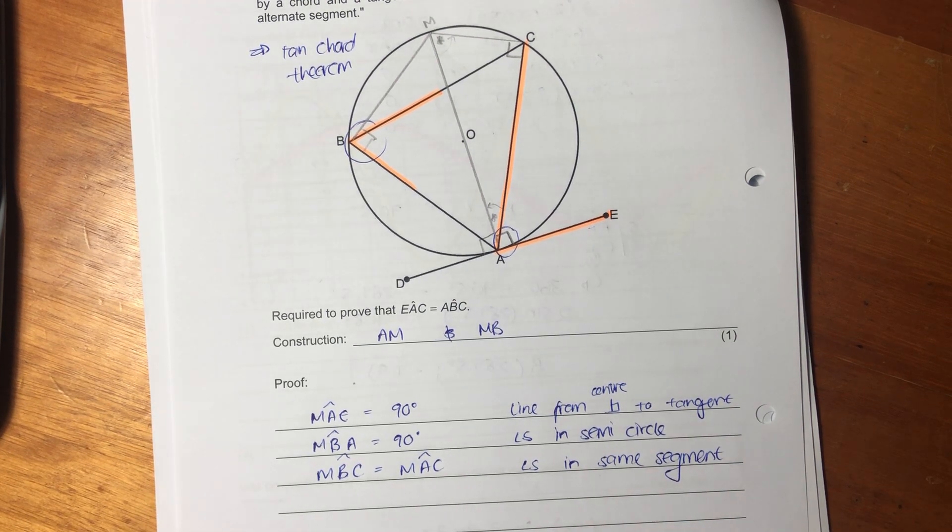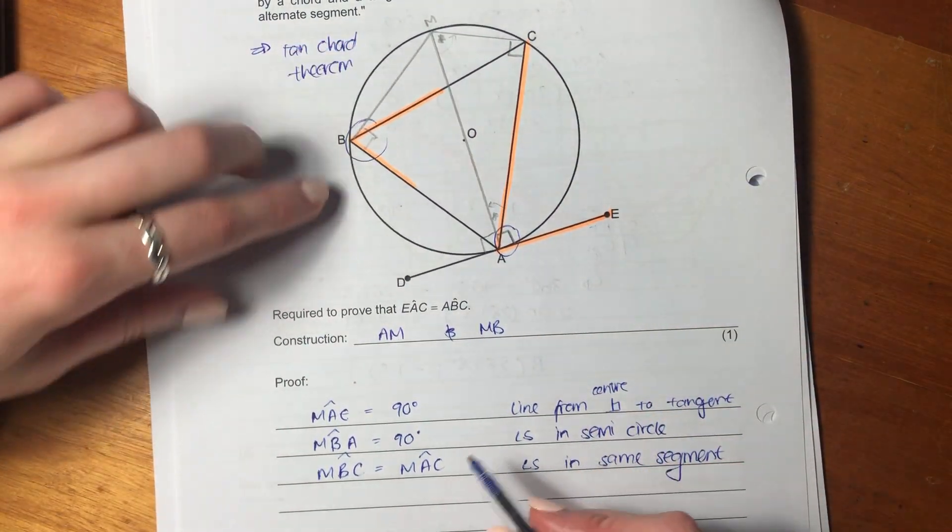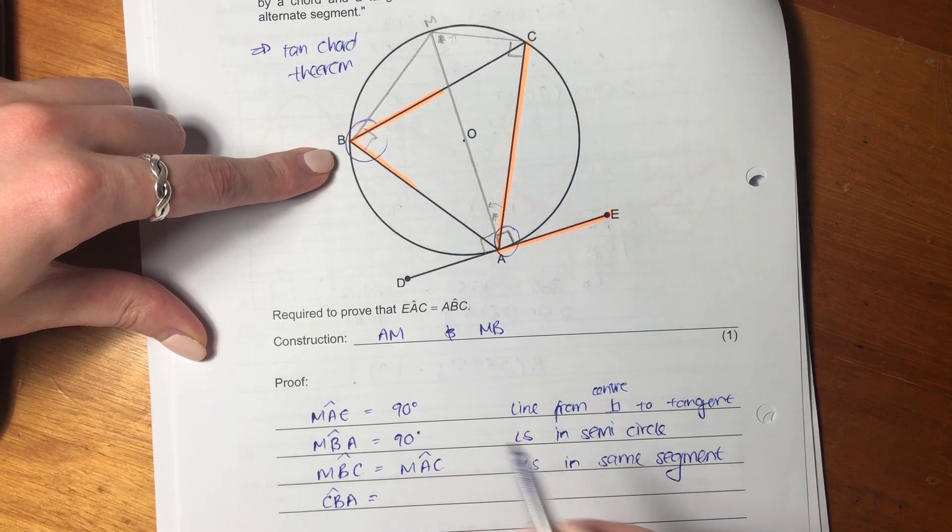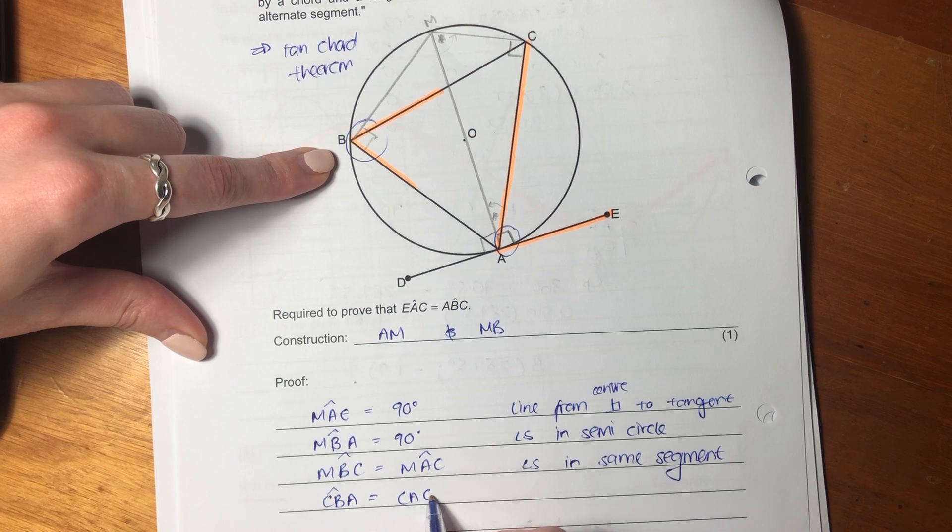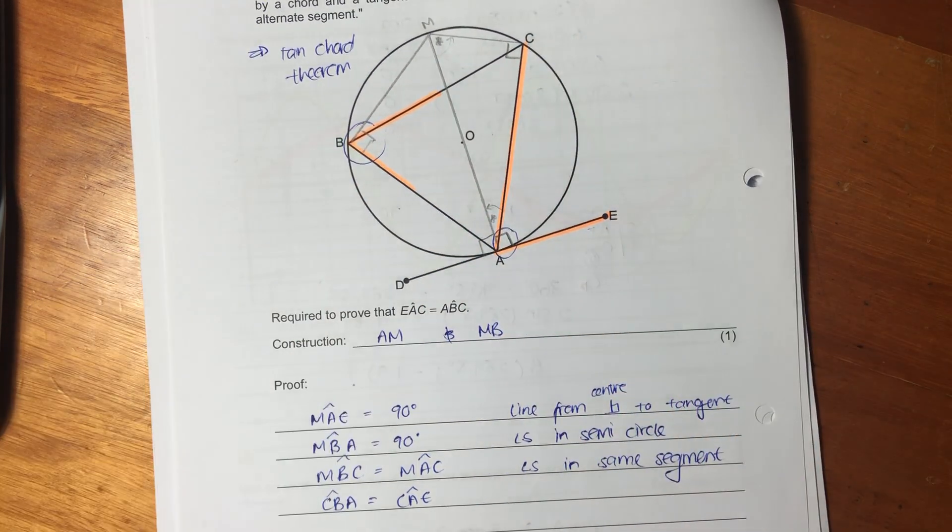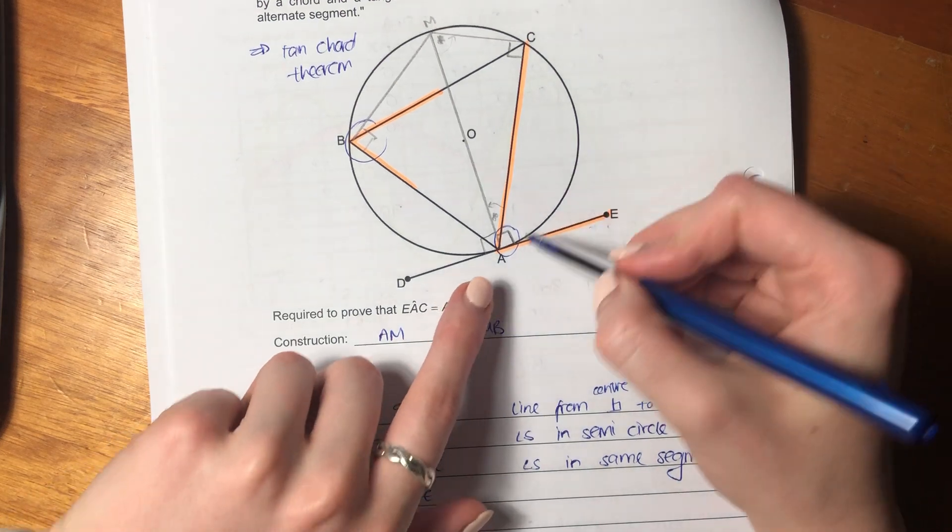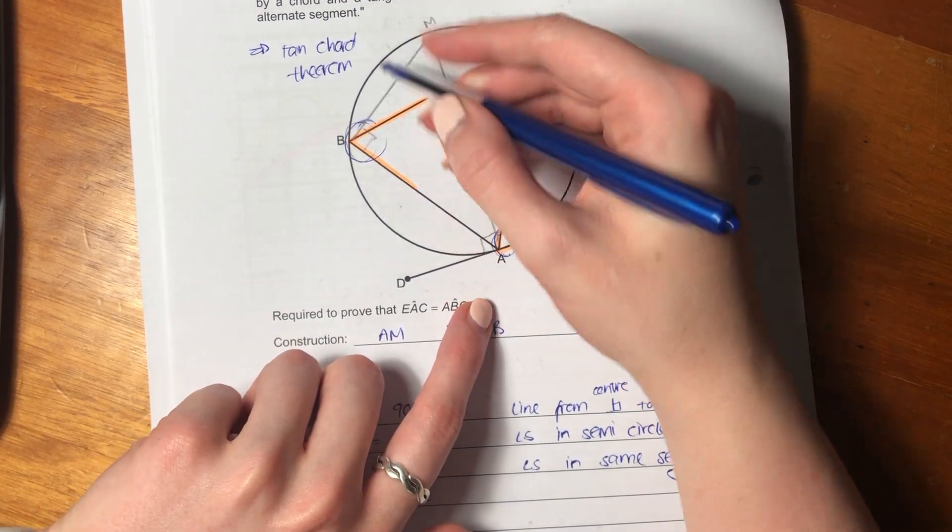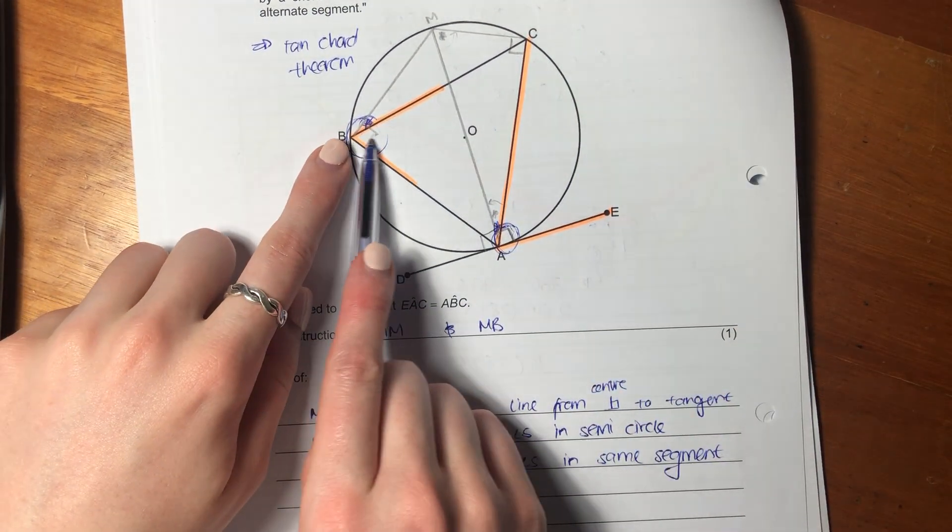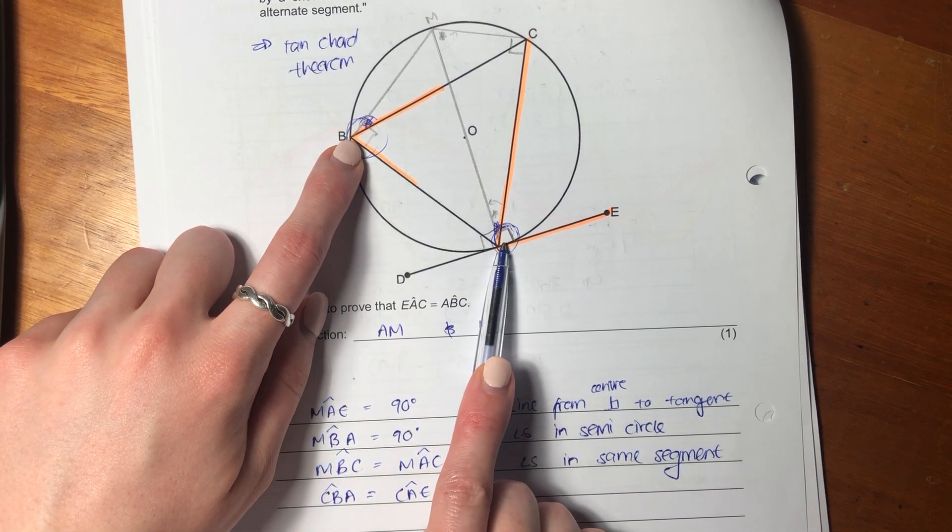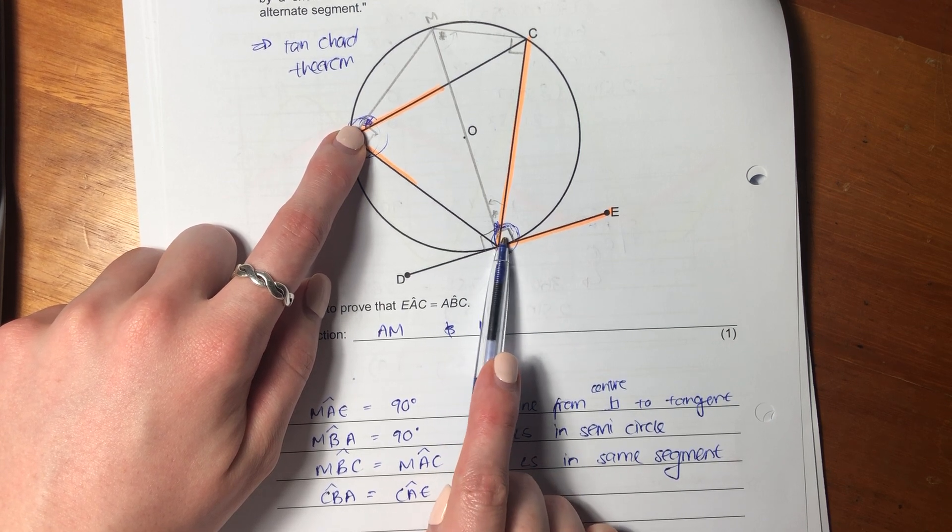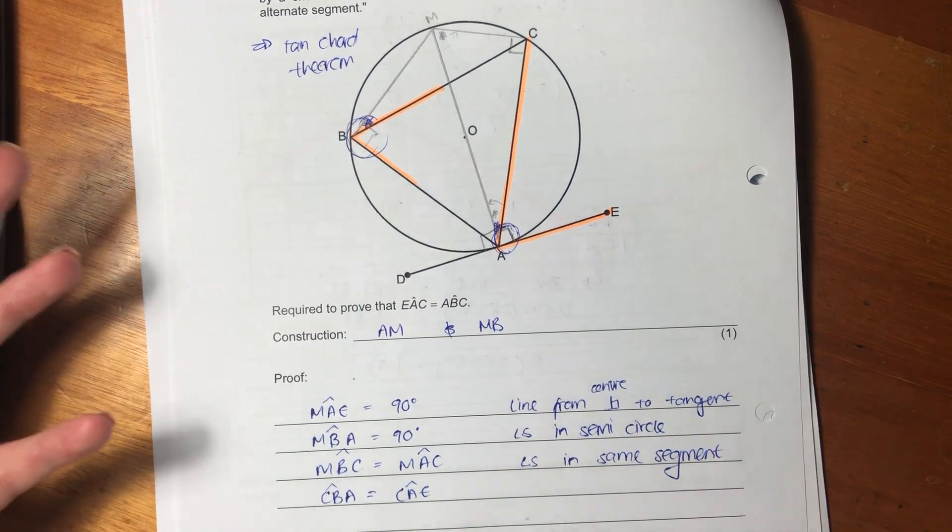But now what we've actually proved is we've proved that my angle CBA equals my angle CAE. That's what we've literally proved. We've proved that that angle there equals that angle there. Well, think about it. We've said that this equals 90 and this equals 90. And we've said that this guy equals this guy. But now we see that that angle there has to equal that angle there because they're both 90 degrees. One of the two angles that make up those 90 degrees are equal. Therefore, the other one also has to be equal.